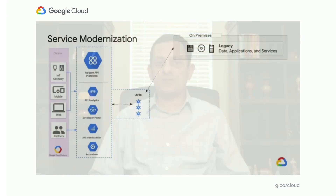Now let's look at the patterns when you are modernizing your application. The first one is service modernization. In this pattern, you have a legacy service running in your on-premise data center, and you put an API facade on top of it, leveraging Apigee API management platform capabilities such as API analytics, bot detection, and protocol mediation, then exposing a nice interface to your consumer developers. This gives a better experience for your end users and consumer developers.